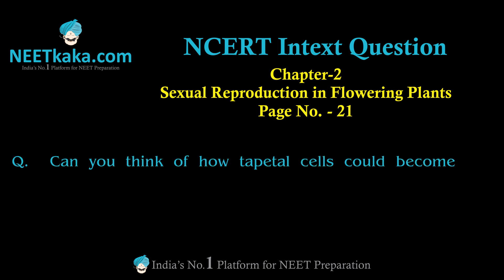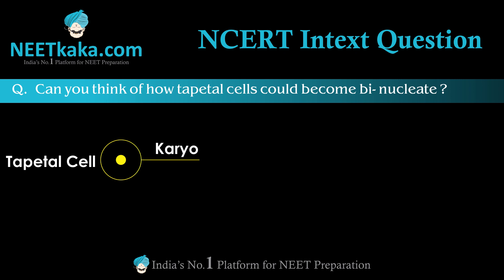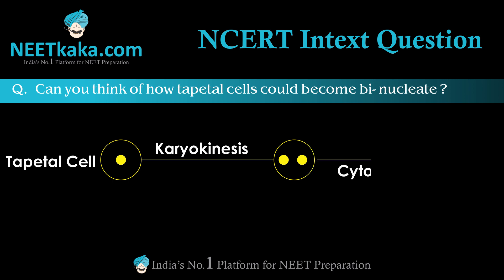To answer this question, remember that any cell could become binucleate if karyokinesis is not followed by cytokinesis. This means that any cell can become binucleate when karyokinesis or endomitosis occurs but cytokinesis does not follow.